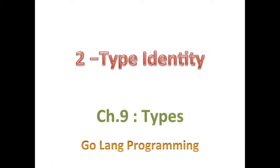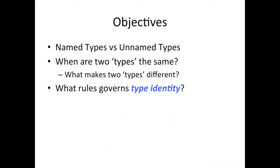We're going to be talking about type identity. The reason why we want to know type identity is because we want to be able to recognize when we have more than one type — what that type is, how it differentiates one type from another. Before we get into type identity, we're going to talk about named types versus unnamed types, and then we're going to start discussing what makes one type the same as another or different.